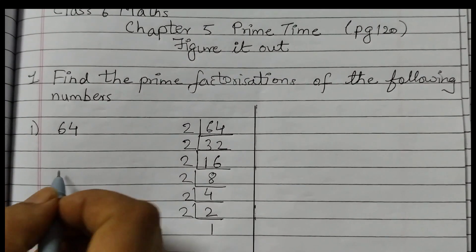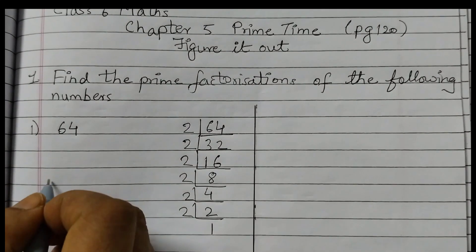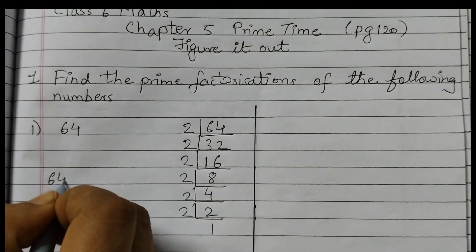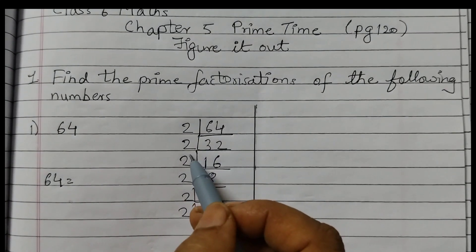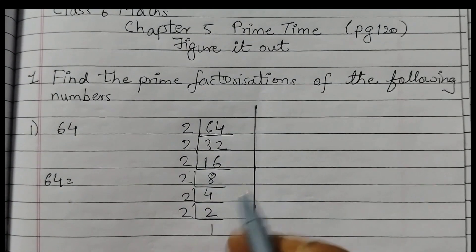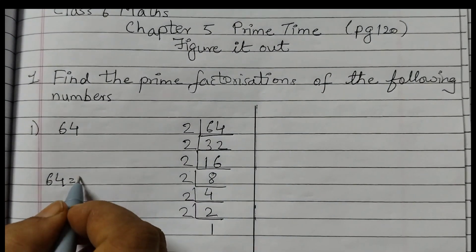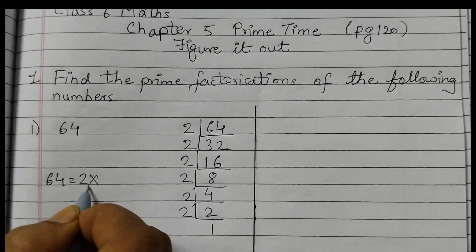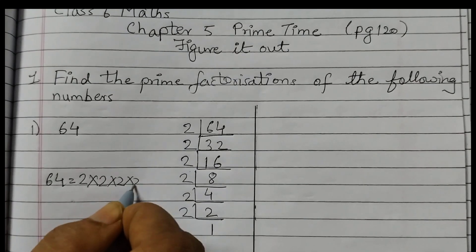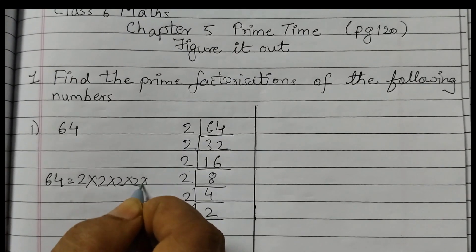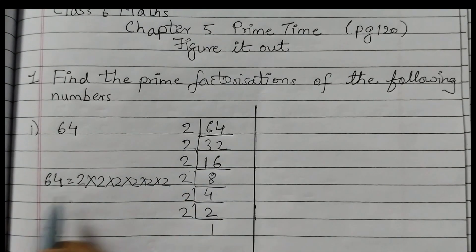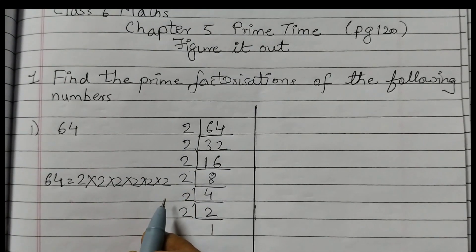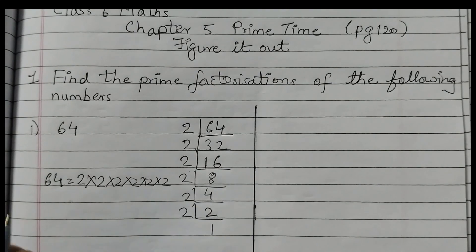So we write: 64 is equal to 2 × 2 × 2 × 2 × 2 × 2, that is 2 six times. So this is how you need to write the prime factors.